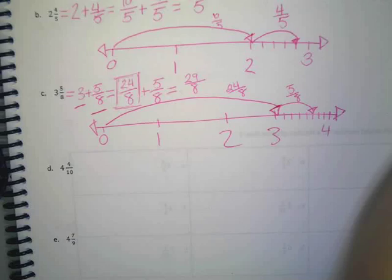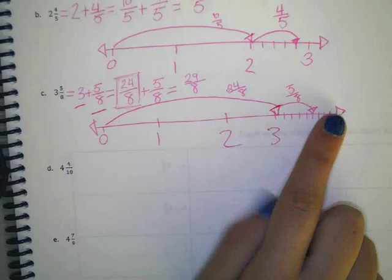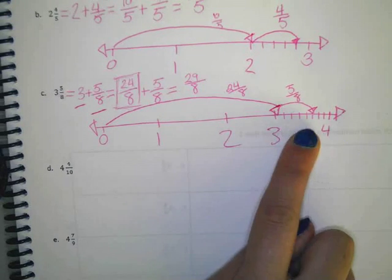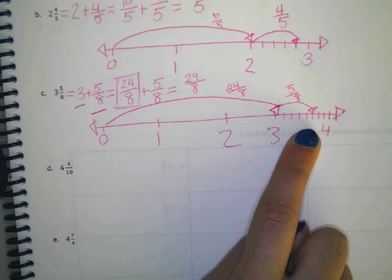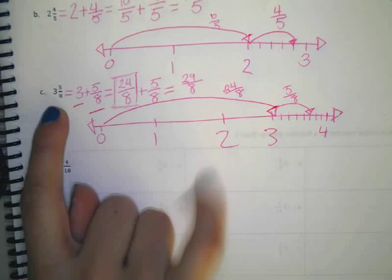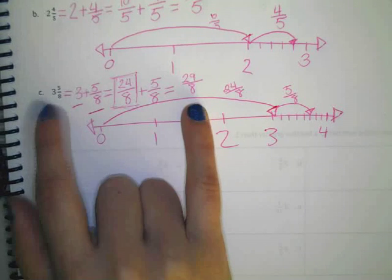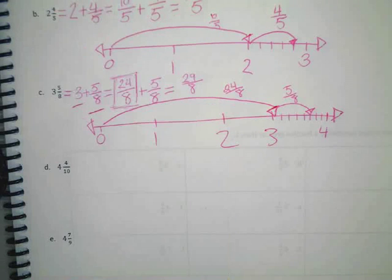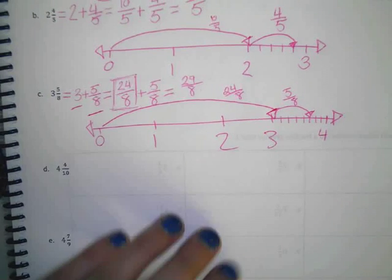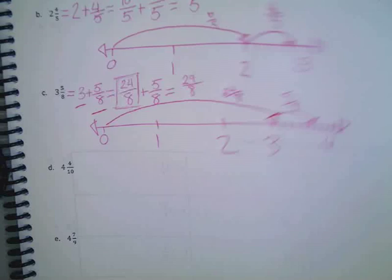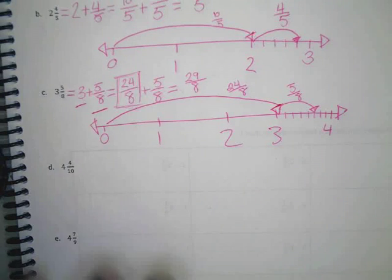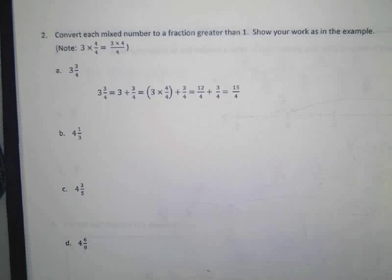So this is proving, guys, that 24 eighths plus five eighths equals three and five eighths. Right? So we're proving with this number line that these two things are equal. Let's skip to the back for right now. We'll look at these other ones later.